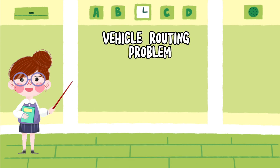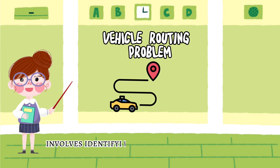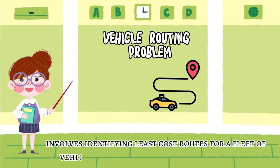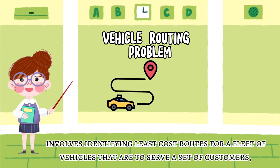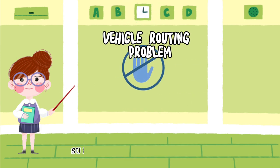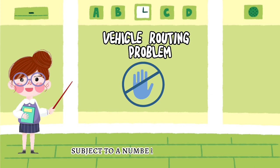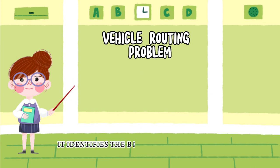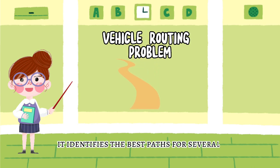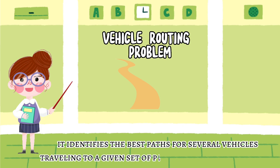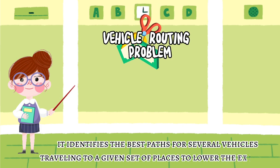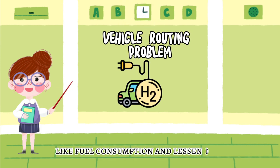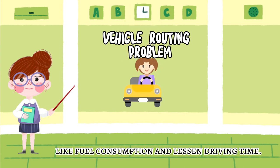Vehicle routing problem involves identifying least cost routes for a fleet of vehicles that are to serve a set of customers, subject to a number of side constraints. It identifies the best paths for several vehicles traveling to a given set of places to lower expenses like fuel consumption and lessen driving time.